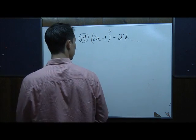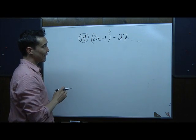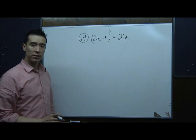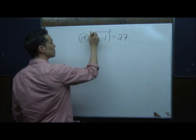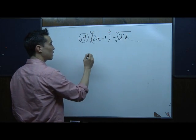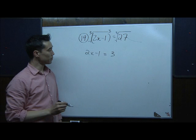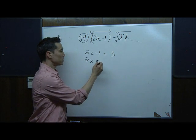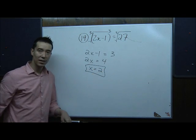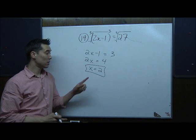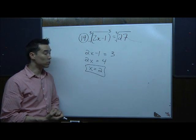Number 19: (2x minus 1) to the 3rd power equals 27. The power is isolated and it's an odd power (3), so when taking the cube root of both sides, we don't need plus or minus. The cube root leaves 2x minus 1 equals the cube root of 27, which is 3. Adding 1: 2x equals 4. Dividing by 2: x equals 2. Since we used an odd root, no extraneous solutions to check. x equals 2.